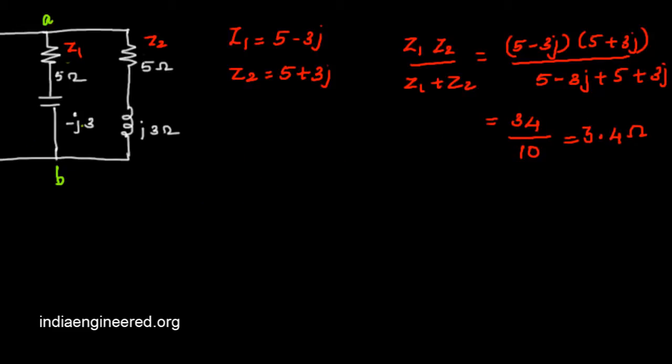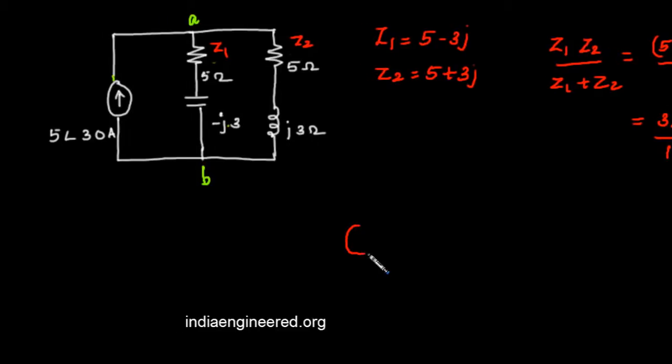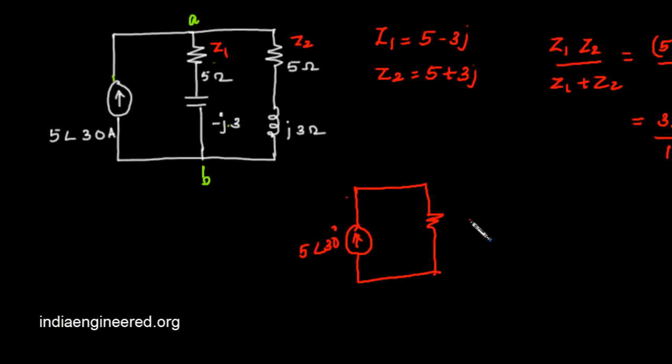Now how can we find out the voltage across AB? What we have done is we have reduced the network into a current source of 5 angle 30 degrees and an equivalent resistance across it with 3.4 ohms.